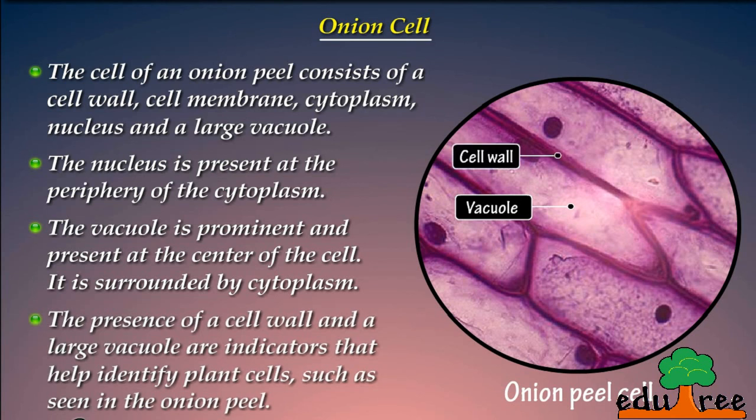The presence of a cell wall and a large vacuole are indicators that help identify plant cells, such as seen in the onion peel.